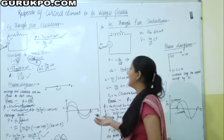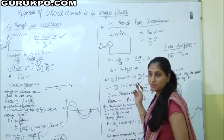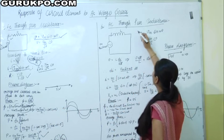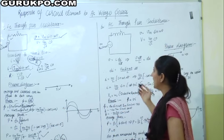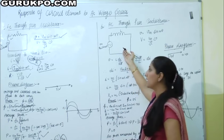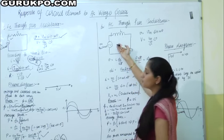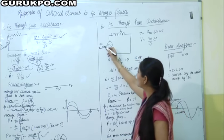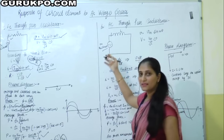Now our second element is the inductor. AC through pure inductance — we have a circuit where an inductor is connected across a voltage source, with V = Vm sin(ωt) as our voltage supply.